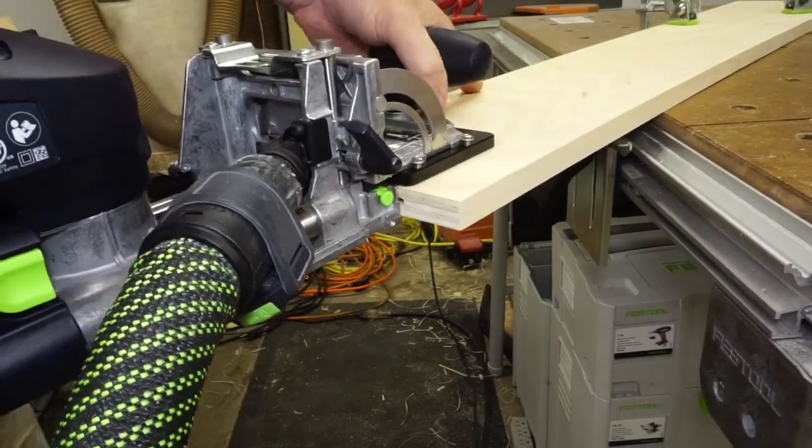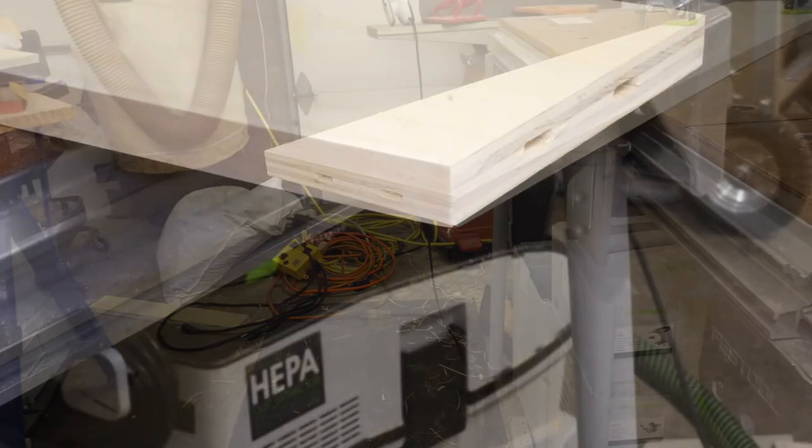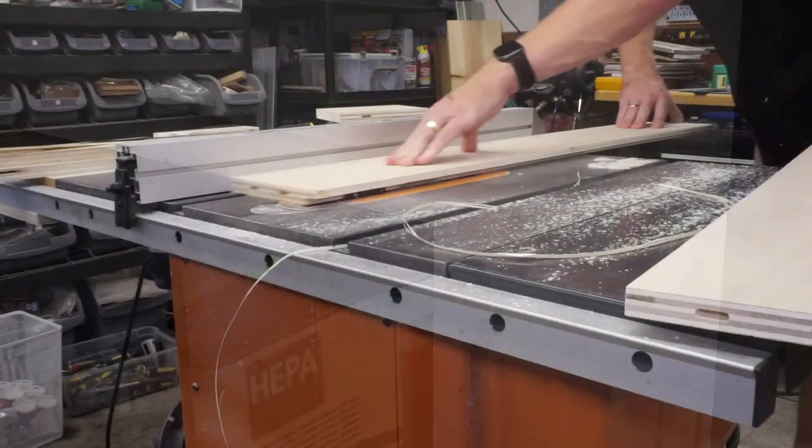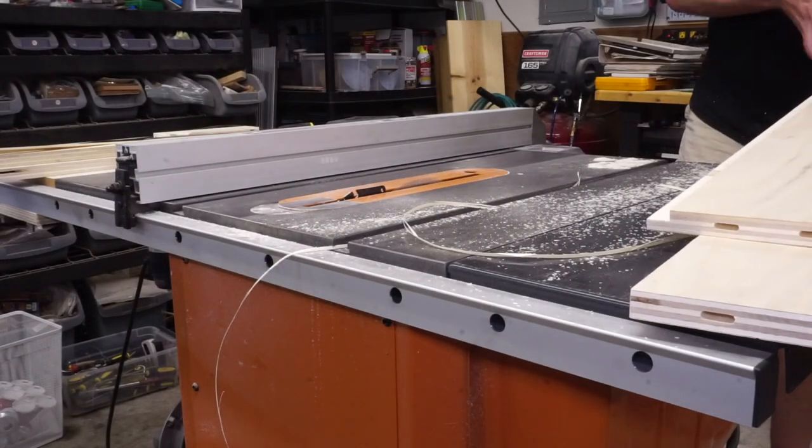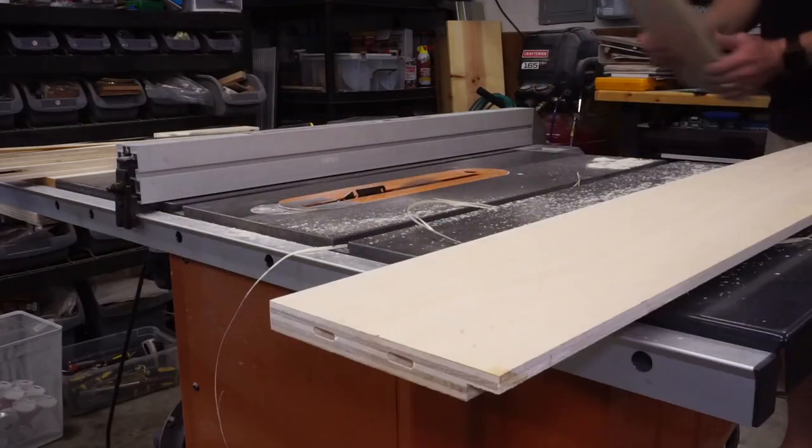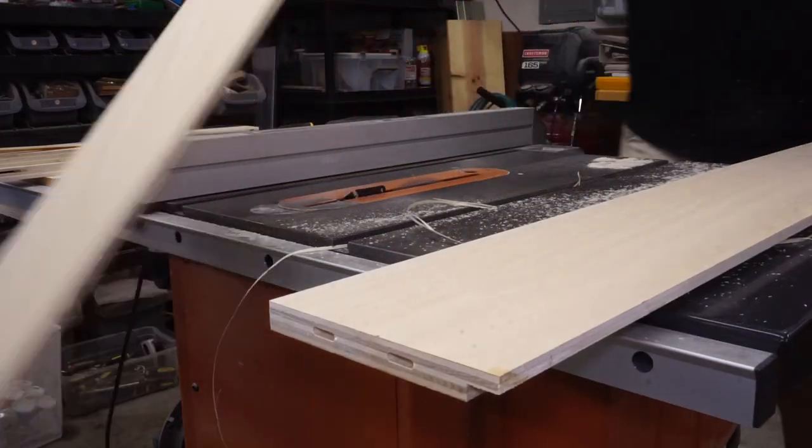Next, we are matching mortises in the ends of each of the three shelf pieces. I used the table saw to cut grooves in the top and bottom shelf to accept the plywood back.